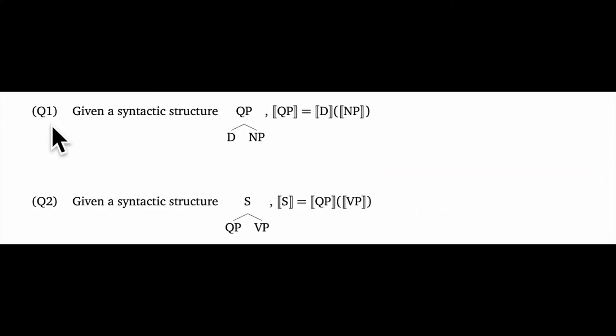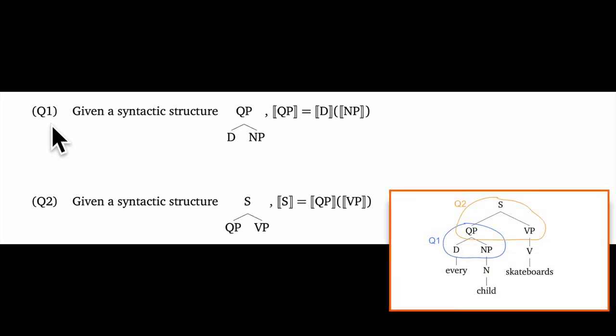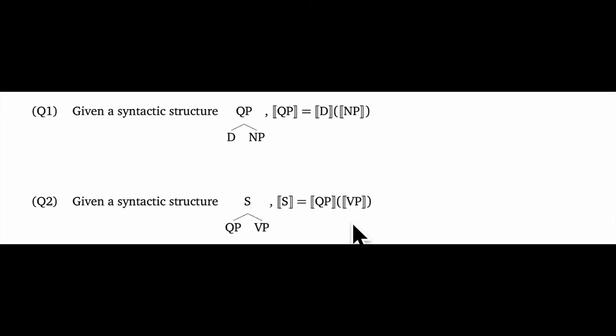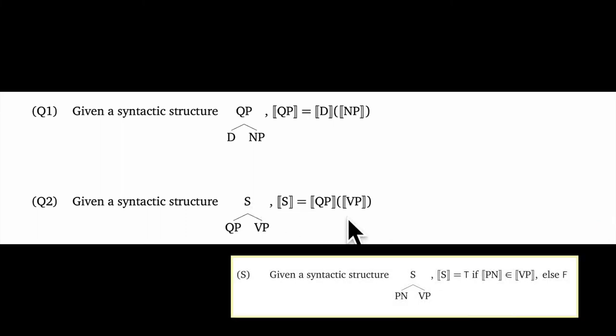Finally we have two rules for handling quantificational determiners since they have two arguments. Rule Q1 says that a determiner D takes its restriction as an argument semantically. And rule Q2 says that the output of Q1 applies to the VP to create the overall meaning of the sentence. So we now have in our grammar two ways of creating S meanings. Notice that they differ semantically. For rule S we assert membership and for rule Q2 we apply a function to an argument.